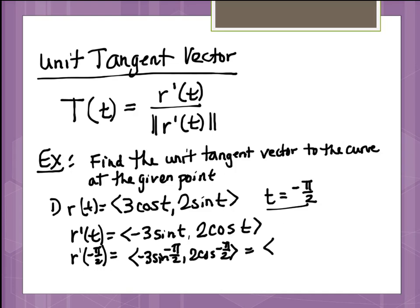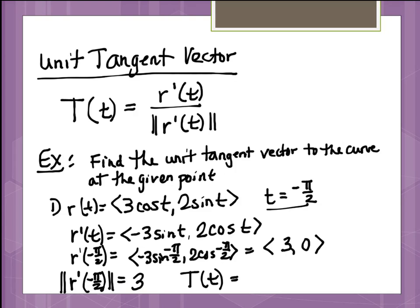The sine of -π/2 is -1, so the first component is -3 times -1, giving positive 3. And for the cosine, we get 0. So the vector is ⟨3, 0⟩. What is the magnitude at that point? It's 3. So the unit tangent vector T(t) is ⟨3, 0⟩ divided by 3, which gives the vector ⟨1, 0⟩.